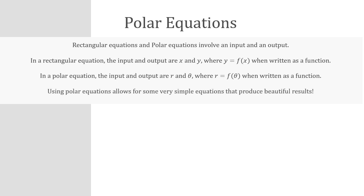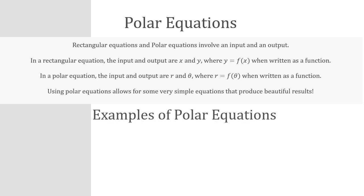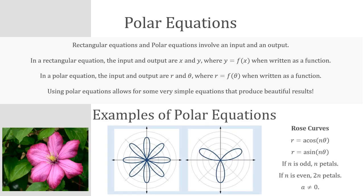Why use polar equations? Polar equations involve very simple equations that produce some really amazing results, and those results oftentimes look like everyday things around you. For example, the polar equation r equals a times the sine or cosine of the quantity n times theta is called a rose curve — it's called a rose curve because it sort of looks like a rose, or a flower.